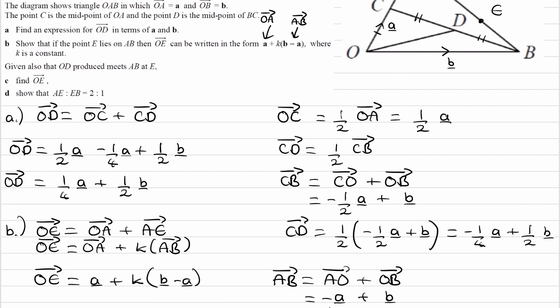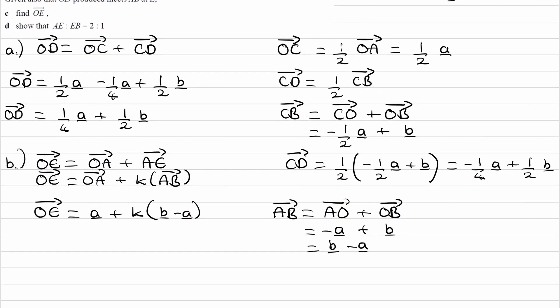For part C, given that OD produced meets AB at point E, so if we extend the line OD, then it crosses the line AB at point E. So there is point E. We're trying to work out what OE is. We already have one equation for OE, but we don't know what K is. K is some unknown scalar. If we knew what K was, then we would know what OE is. When you have a scenario like this, how we can work out what the scalar is, is to take some other path from O to E.